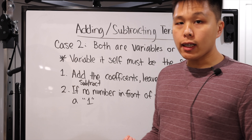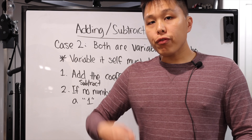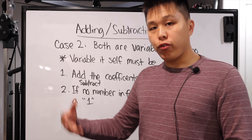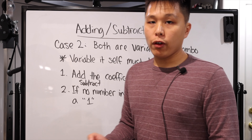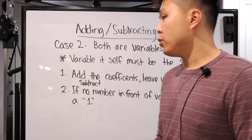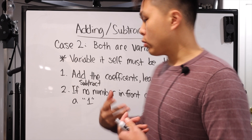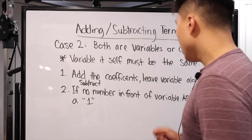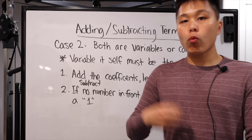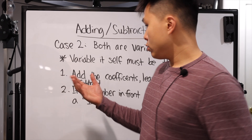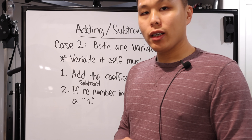The second step is an if-case: if there is no coefficient in front of the variable — it just looks like the variable itself, just a, just b, just x, y, or z — you're going to assume there is a number 1 in front of it, and then go back to step one and carry it out accordingly. Let's look at some examples of what I mean by that.